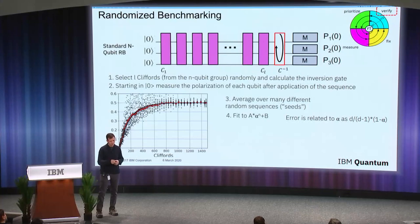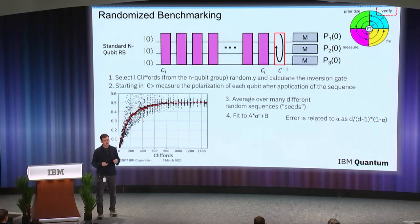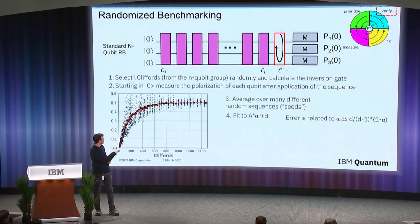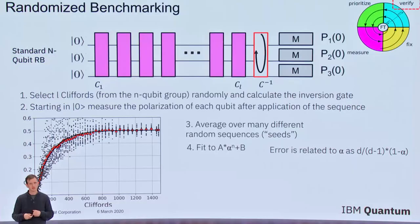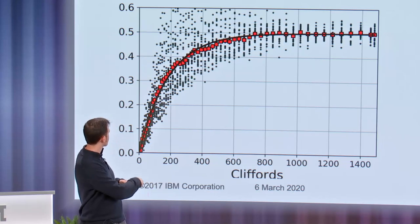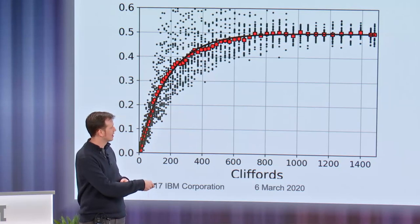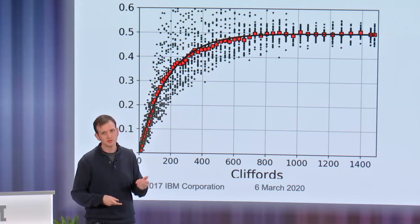As a reminder for randomized benchmarking: we select a string of random Clifford gates of length L, then we calculate the inversion gate — and that can be done efficiently because these are Cliffords. Starting in the zero state, we apply this sequence to the set of n qubits, then we measure the polarization after the application of that sequence. For each individual random sequence you get a noisy distribution, but if you average over many random sequences, you get a nice exponential fit that can be fit to an exponential function where the fit coefficient is very simply related to the average gate error.